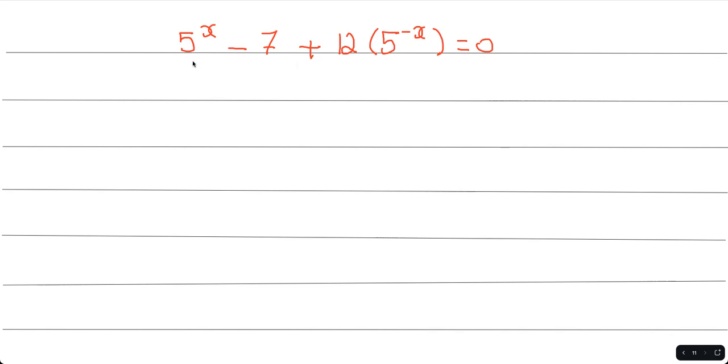So another exponential question: 5 to the power of x minus 7 plus 12, brackets 5 to the power of negative x, close bracket equals 0.